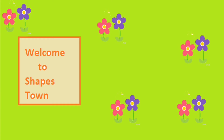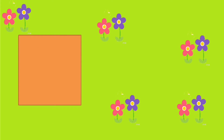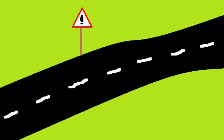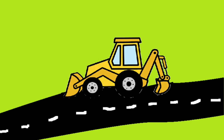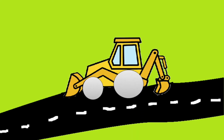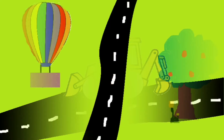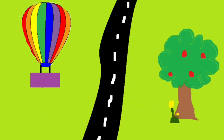Let's look for shapes. Do you see any shapes? Square. Do you see any shapes? Triangle. Do you see any shapes? Circles. Do you see any shapes? Rectangle.